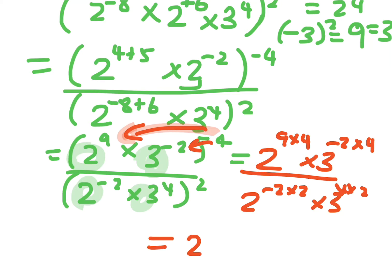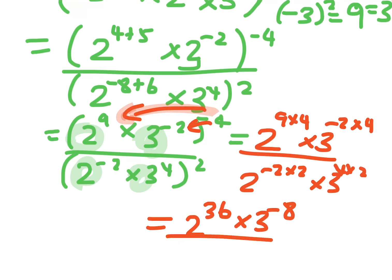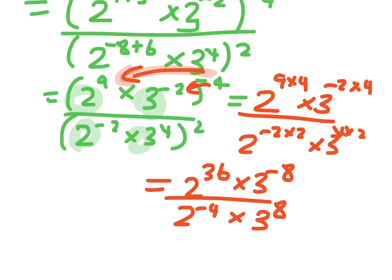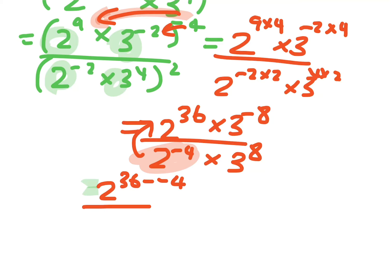So now, looking at that, that would be 2 to the 36 times 3 to the minus 8. And 2 to the minus 4 times 3 to the 8. So what we're going to do now is we need to write it with positive indices. I'm going to take that 2 to the minus 4 and move it up to the top, so that's going to be 2 to the 36 minus minus 4. And then I'm going to bring that 3 to the minus 8 down the bottom, because if I bring it down the bottom it'll make it a positive index.